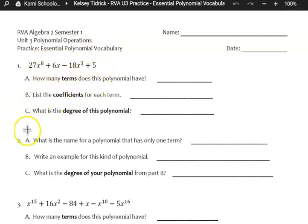So based on your vocabulary, terms are separated by addition and subtraction signs. So right here we have 27x to the 8th, so that's one term, and then plus 6x. I always like to include the plus sign with the term because that does tell me if it's positive or negative. So that's my second term, and then we have negative 18x to the 3rd, and then we have positive 5. So this polynomial has four terms.